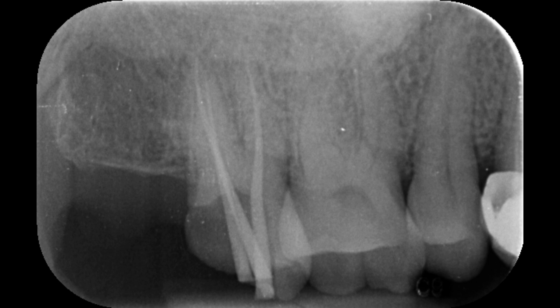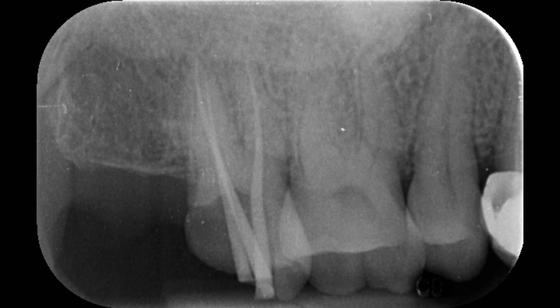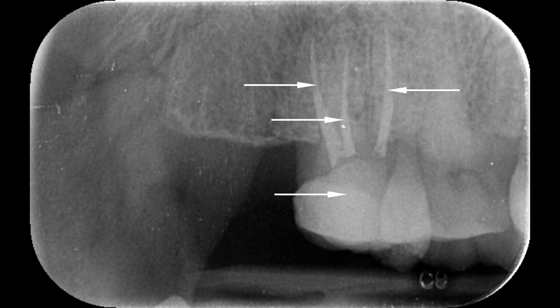After that I completely obturated all three canals and restored the tooth with composite restoration. This is my final distal view radiograph where you can see all three well-obturated canals — this is the meso-buccal canal, this is the disto-buccal canal, and this is the palatal canal. And this is the permanent composite restoration.